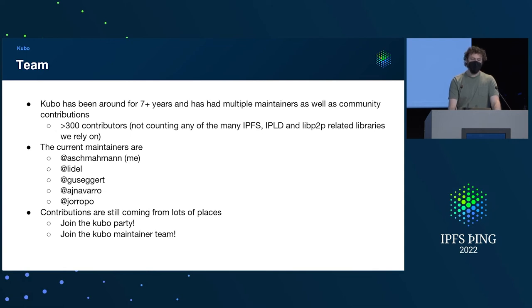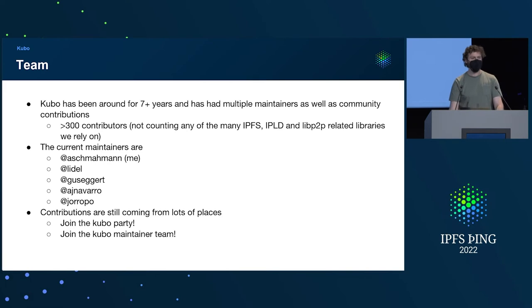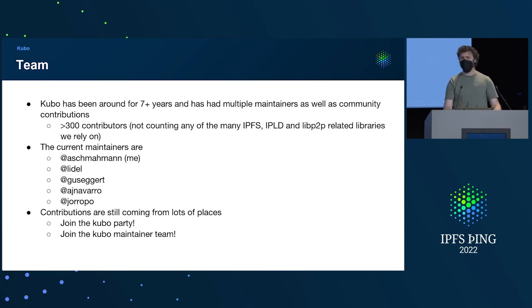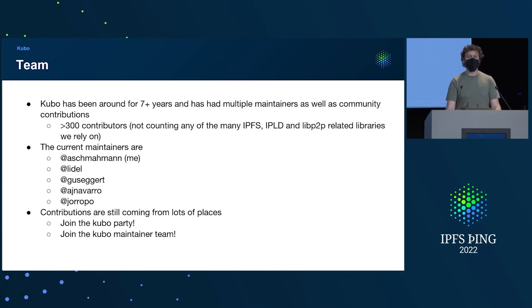Kubo has been around for a long time and a lot of people have contributed to the project — over 300 contributors found through GitHub. The set of maintainers responsible for triaging commits and PRs are myself, Lytle, Gus, Antonio, and Hugo. Come chat with us — we're pretty friendly. If you want to contribute to Kubo, or if you want to be a maintainer, please do. There are many open PRs and issues — we've got stuff for you.